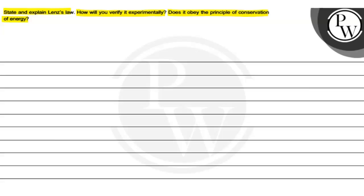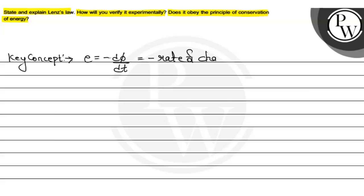So first of all, if we talk about Lenz's Law, when was it introduced? So it should be clear for you. If we solve this question, let's see the key concept. Faraday's second law — basically if we talk about induced EMF formula, it is minus dΦ by dt, which means the negative of rate of change in magnetic flux. So the significance of the negative sign is basically we have not yet covered Lenz's Law.